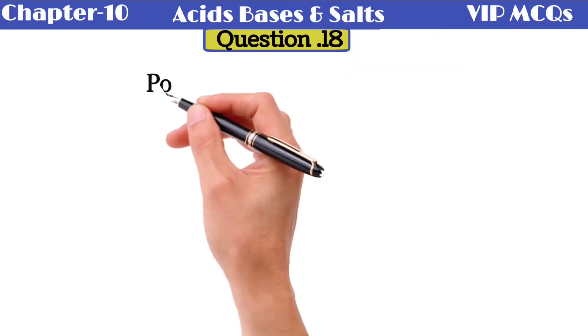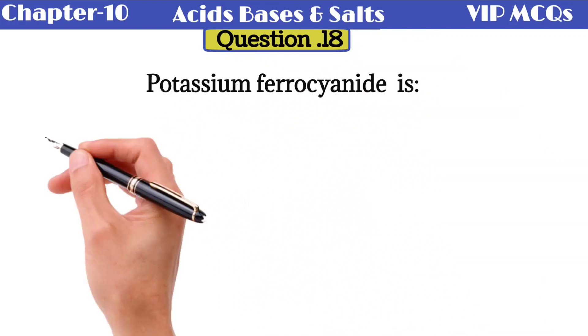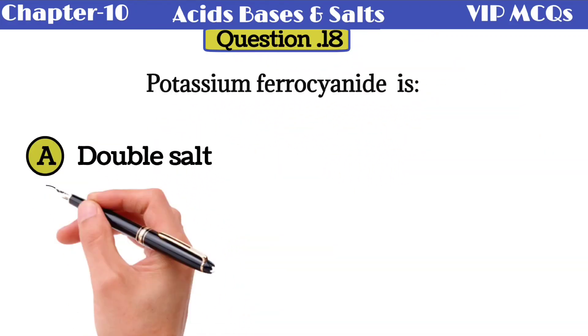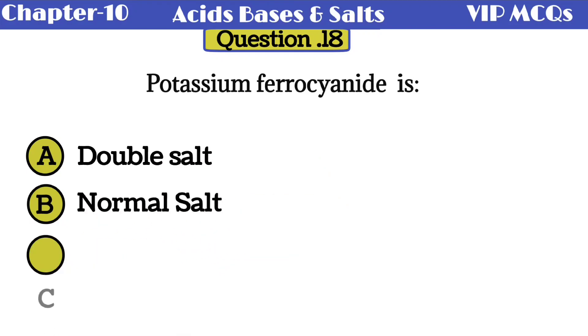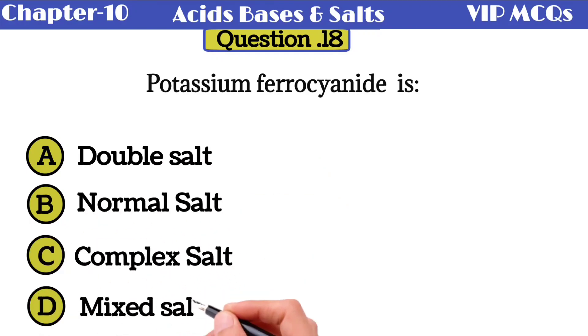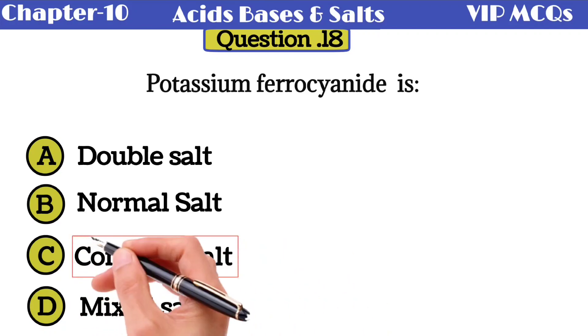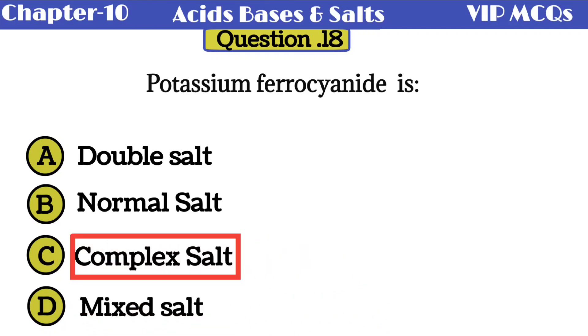Question 18: potassium ferrocyanide is - option A double salt, option B normal salt, option C complex salt, option D mixed salt. The correct answer is complex salt. A salt that consists of a complex ion is known as complex salt. In this salt, potassium is a simple ion while ferrocyanide is a complex ion.